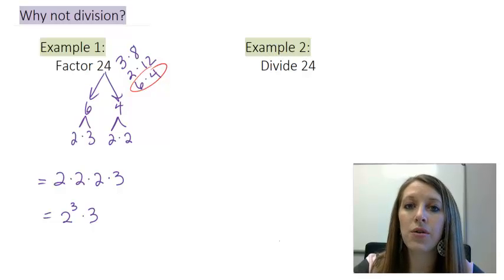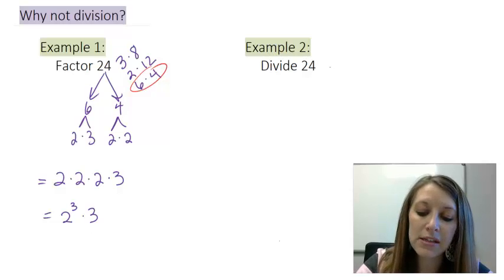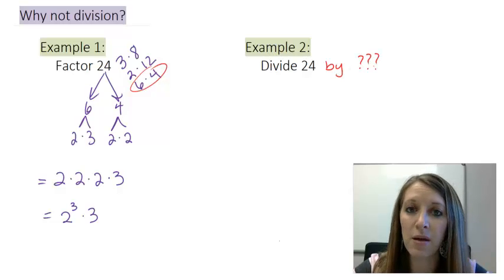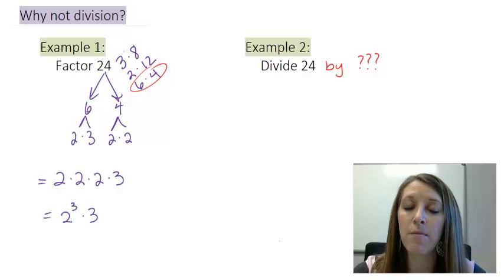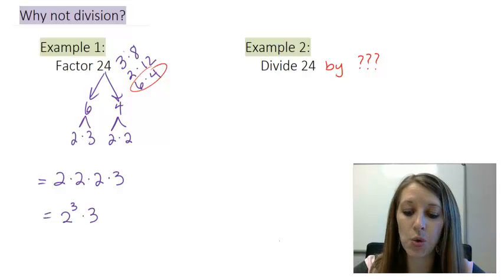Now in example 2, if I asked you to divide 24, I hope your response would be, by what? So in example 2, I haven't really given you enough information. When the problem specifically says divide something, it needs to say by whatever number we're trying to divide it by. So I could pick any one of these numbers over here to divide it to come out evenly. Or I could pick any other number, just note that my answer will not be a whole number in that situation.